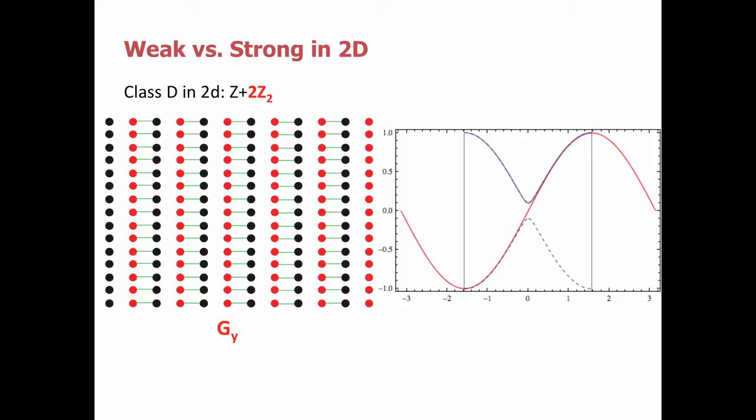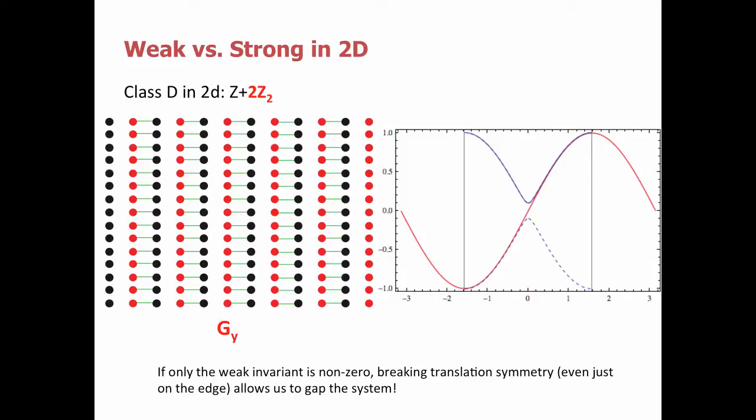If I can open a gap in the edge states, that means I can find a gapped real-space interpolation between my putative topological weak phase and the vacuum outside. Because I have this gapped adiabatic interpolation, we should think of these two phases as equivalent and not distinguished by a non-trivial topological invariant. This is exactly why translation symmetry is important: if only the weak invariant is non-zero, then breaking translation symmetry, even just on the edge, allows us to gap the system entirely and make it adiabatically connected to the vacuum.